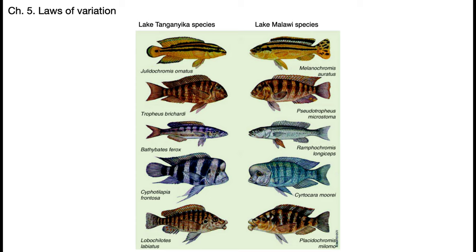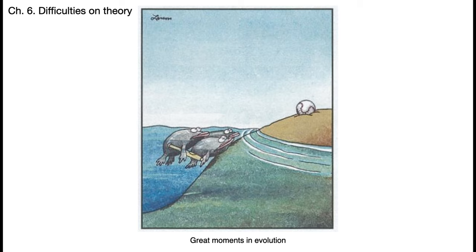Darwin was hopeless on genetics — Mendel's work came about very late in his life and there's no evidence Darwin was aware of it. Here comparing cichlid fishes from deep rift valley lakes in East Africa: they look similar in appearance but are actually different species that can't interbreed with one another. The reason they look so similar is because they're found in similar ecological niches within these deep water lakes — some low down, some along rocky surfaces, some out in open water. So they converge on similar appearances even though they're not related to one another.